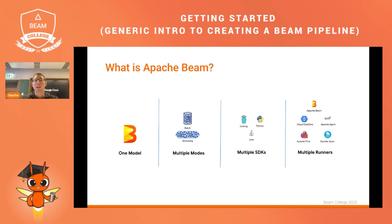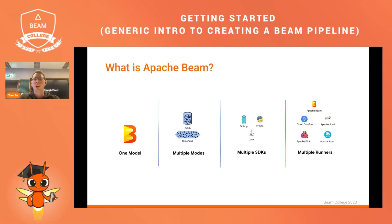Batch data sources can be a file or a database, while streaming data sources can be messaging services, for instance. Beam currently offers three SDKs in Go, Python, and Java, and it runs on multiple runners such as Google Cloud Dataflow, Apache Spark, Apache Flink, Apache Apex, or the Direct Runner for local development and testing.